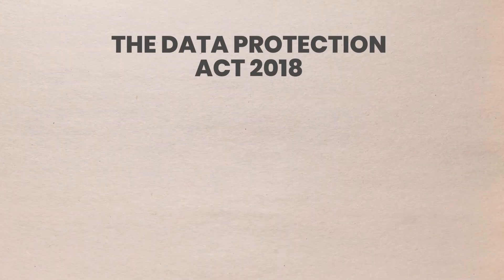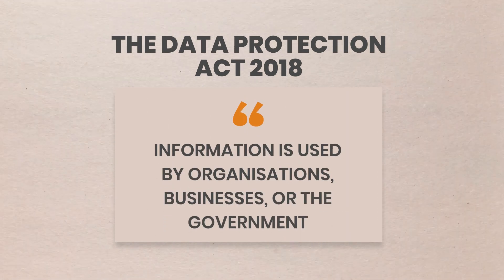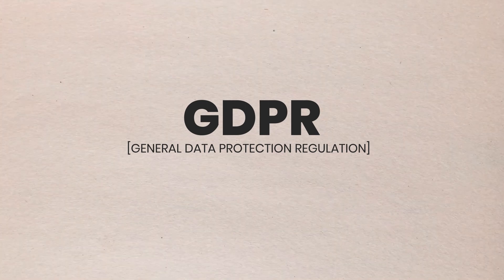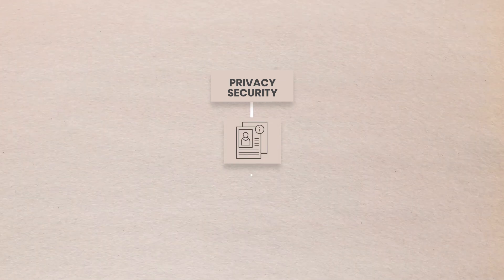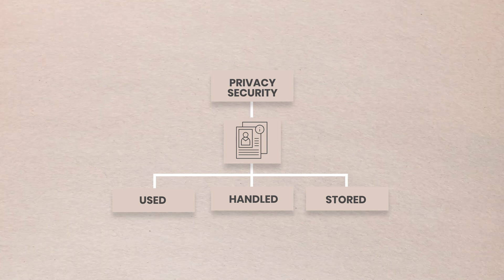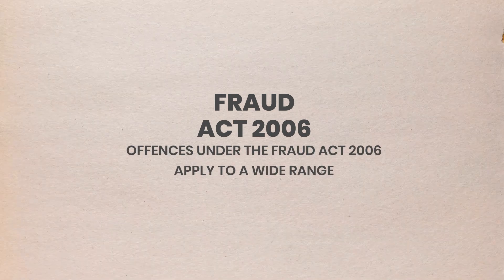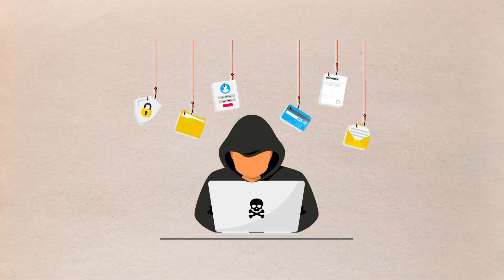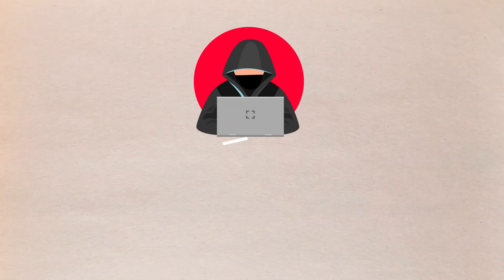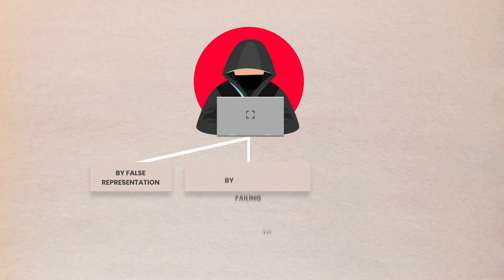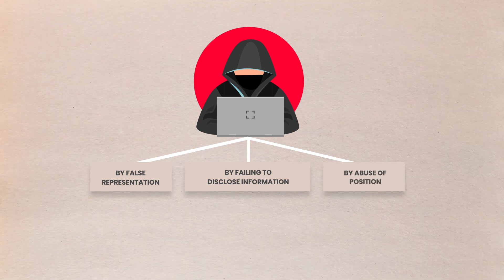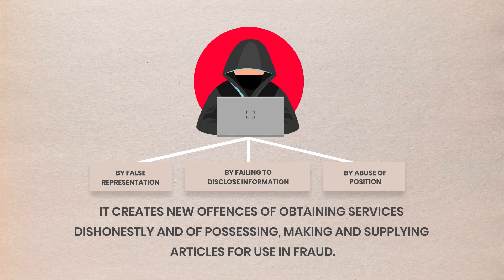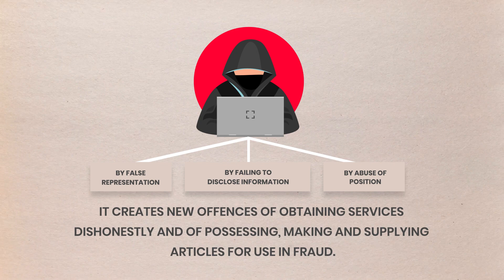The Data Protection Act 2018 aims to regulate how information is used by organisations, businesses, or the government. This is part of the United Kingdom's General Data Protection Regulation (GDPR), a stringent privacy and security law that governs how information is used, handled, and stored to shield users and businesses. The Fraud Act 2006 applies to a wide range of cyber-frauds by focusing on the underlying dishonesty and deception. The Act provides for a general offence of fraud with three ways of committing it: by false representation, by failing to disclose information, and by abuse of position. It also creates new offences of obtaining services dishonestly and of possessing, making, and supplying articles for use in fraud.